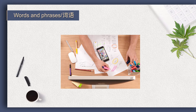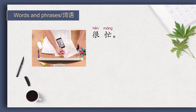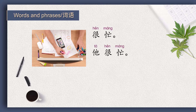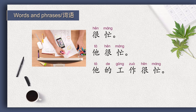忙. Very busy is 很忙。 He is very busy is 她很忙。 This picture tells us that the man is very busy with work, not with his study. So how do we translate? He is very busy with his work — 她的工作很忙。